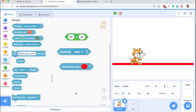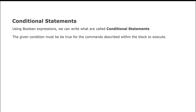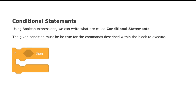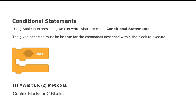To use Boolean expressions, you have to use something called conditional statements. Using Boolean expressions, we can write what are called conditional statements. A statement is a command given to the computer, but if we want that command to be executed only if something is true or false, then we use Boolean expressions. So the given condition must be true for the commands within the blocks to execute. For example, 'if then' is a conditional statement — only if the Boolean expression is true will the command inside that block get executed. Conditional statements are also called control blocks or C blocks.